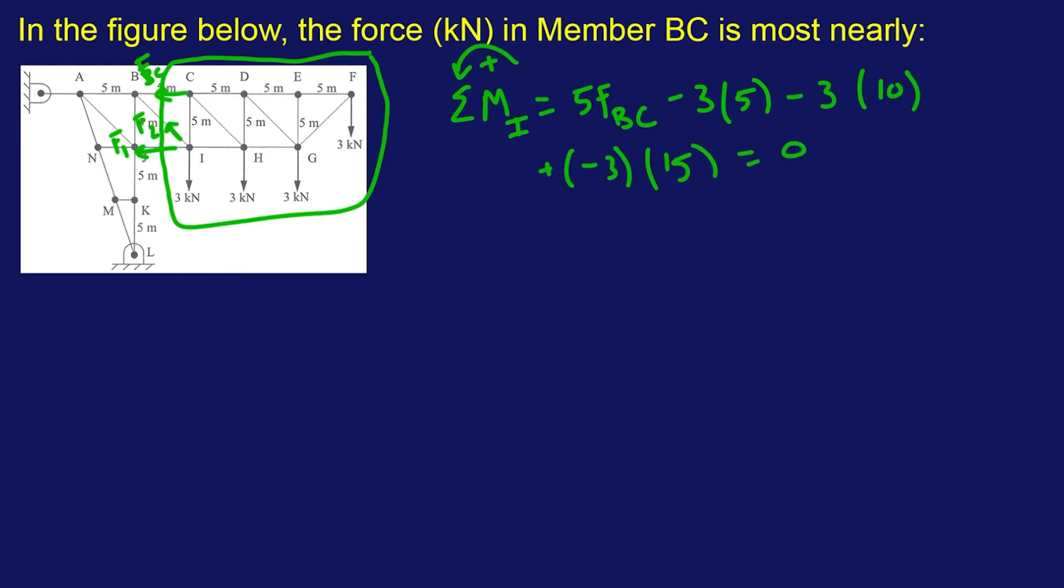And this is going to be equal to 0, because this is a statics problem. There's no dynamics going on here. So we got 5 FBC. I'm just going to clean this up a little bit. You have to start off dirty to make it clean. 5 FBC minus 15 minus 30 minus 45, which equals 0. Add these up. We're going to get FBC. Five of those. Don't forget the five. So if you add these up, that's going to be 75 plus 15. That's 90, right? Yeah. 75 plus 15. That is 90. It is 90. What am I talking about? Please tell me I'm doing this right.